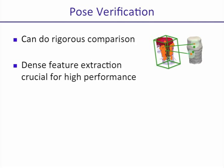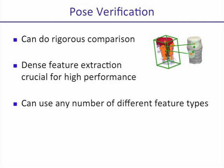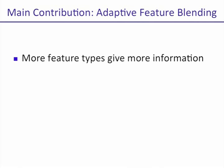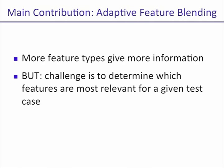Experimentally, we observed that dense feature extraction is crucial for high performance, and we can use any number of different feature types. This leads us to our main contribution, which is an adaptive feature blending procedure in order to combine the scores we obtain using pose verification. More feature types give us more information in order to determine the correct object, but the challenge is to determine which features are most relevant for a given test case.